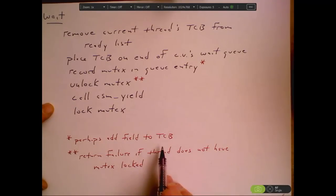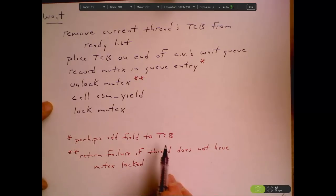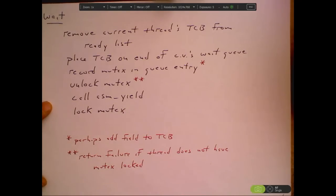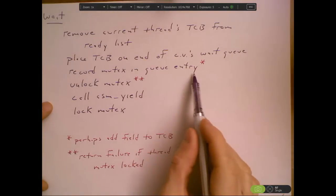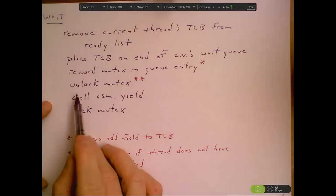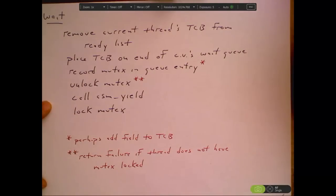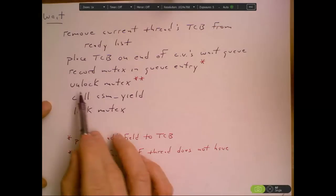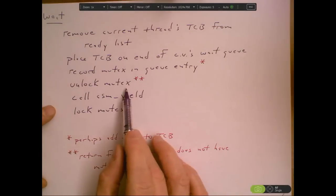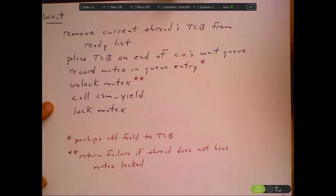We record the mutex in the queue entry. To do that, maybe we would add a field to the TCB for this purpose. If the TCBs are just going to be linked on these queues like they're linked on the ready queue and presumably linked on the mutex queue that we just talked about. So we might just add a field to the TCB in order to handle that remembering of the mutex. Then we got to unlock the mutex because before we block, we need to release the mutex.